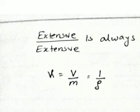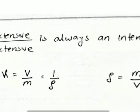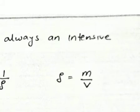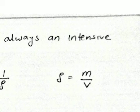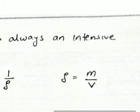One more thing: specific volume is the reciprocal of density — that is, 1/ρ. Here density ρ is mass per unit volume (M/V), but specific volume is volume per unit mass.